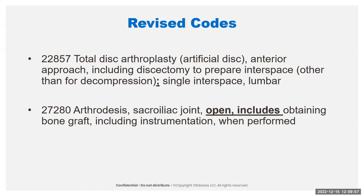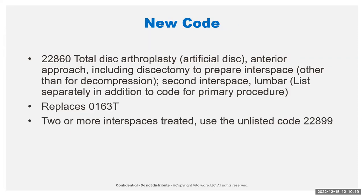When we get to the new code, you'll see what the baby code is. The 27280 is really just kind of a cosmetic change — CPT is trying to get all of their terminology in a row, so they just rearranged where 'open' was and changed the word 'including' to 'includes.' The new code, the 22860, is your total disc arthroplasty for an artificial disc. This is now the baby code to the 22857, and it is replacing the Category 3 code 0163T.